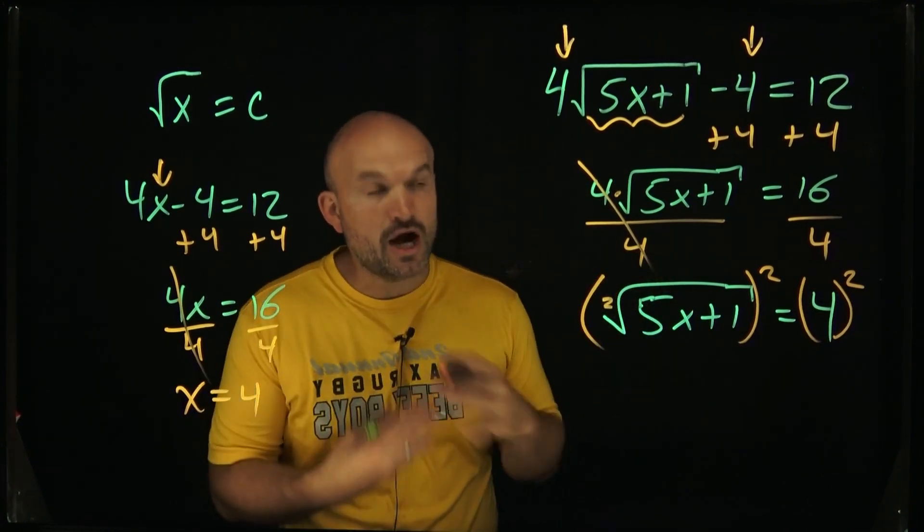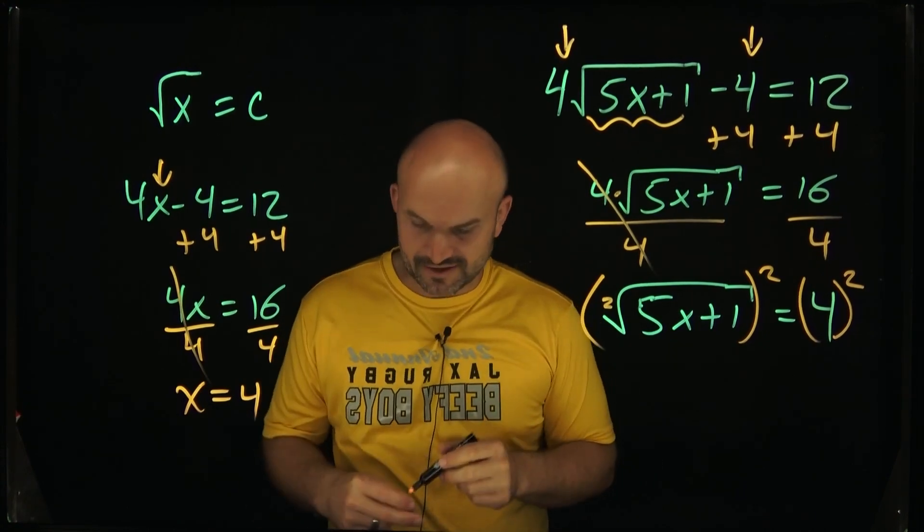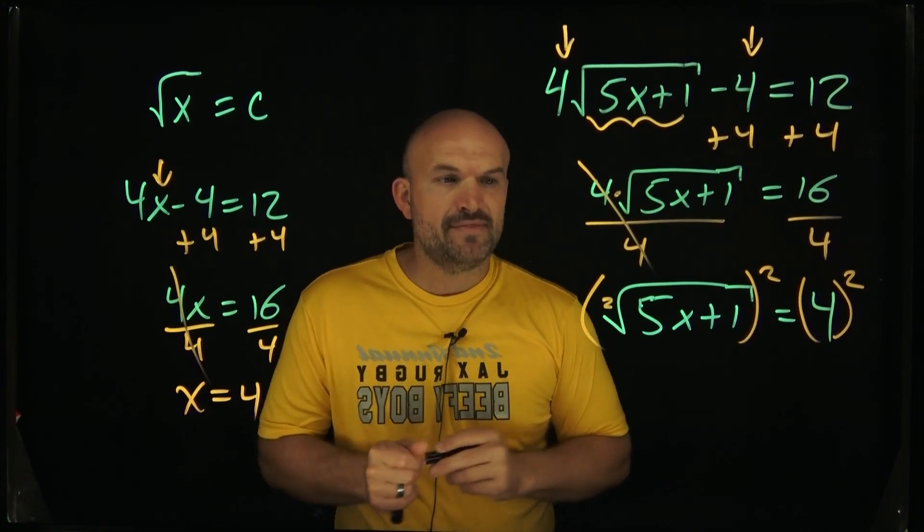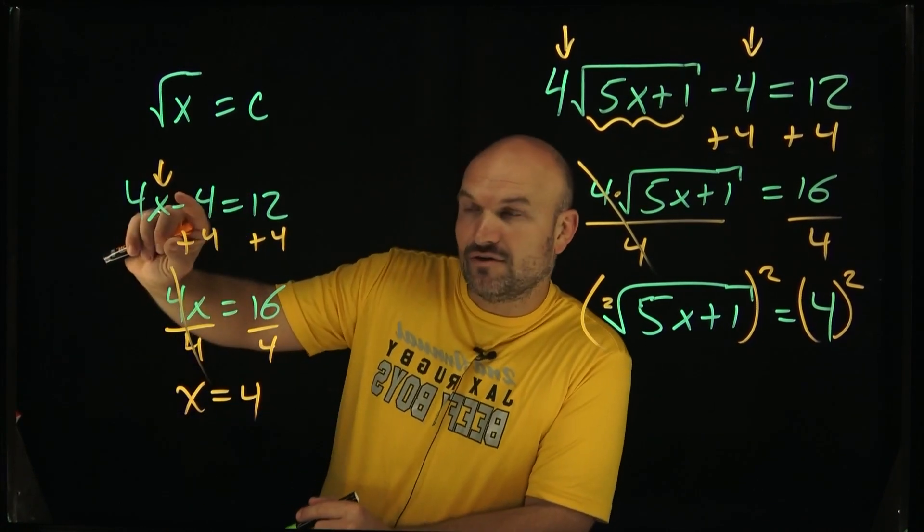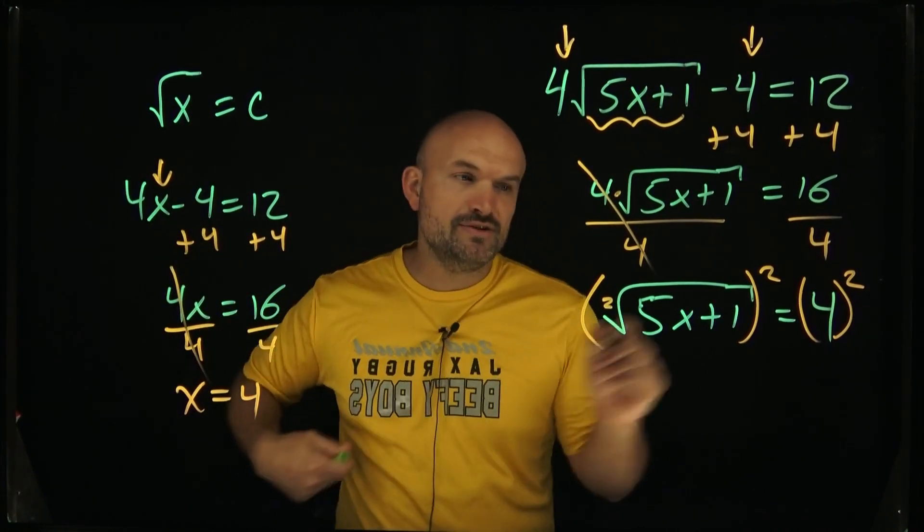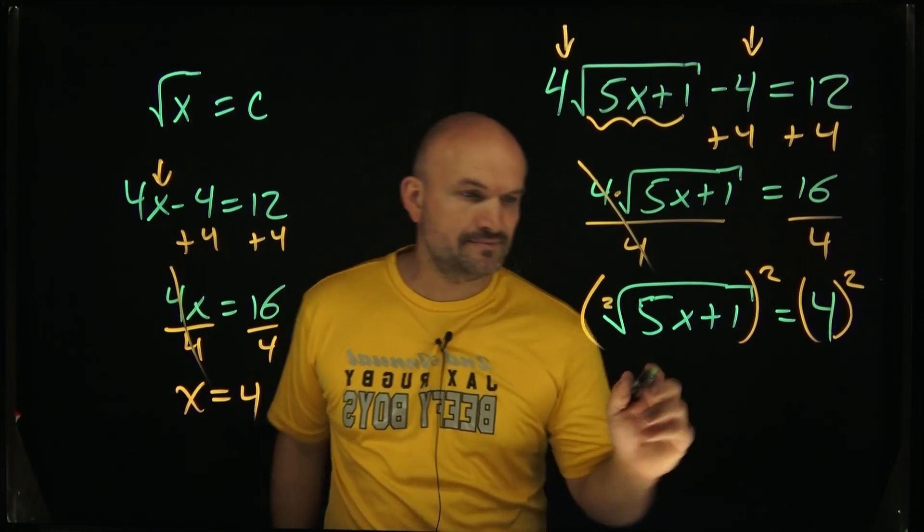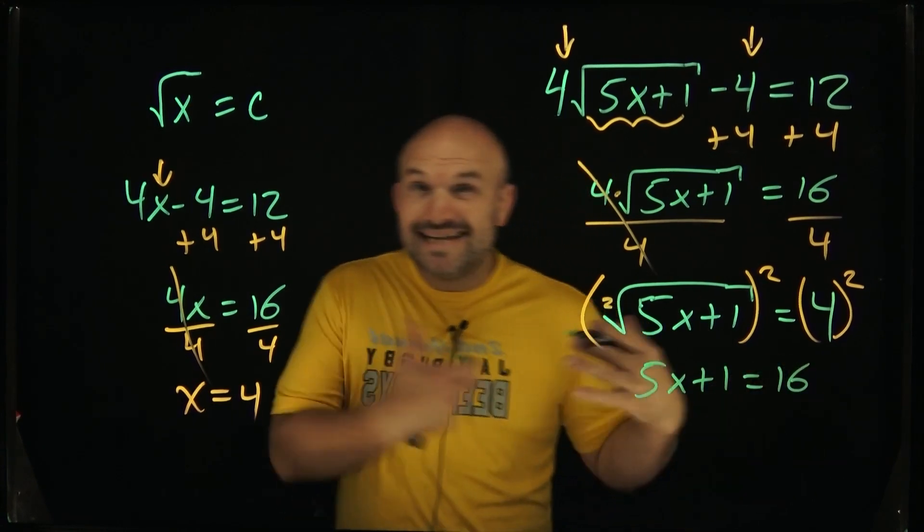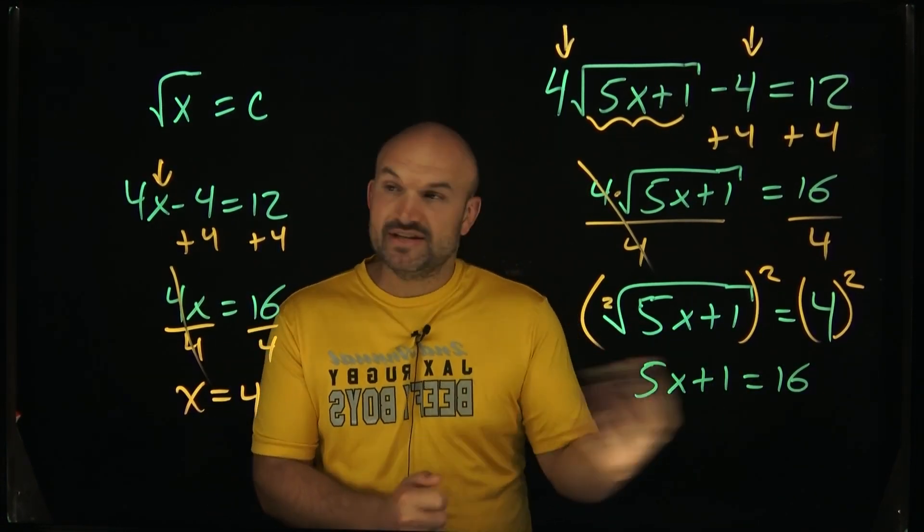Now, when we're squaring both sides, we always need to be careful of creating extraneous solutions. We'll talk about that in some future videos. But for right now, I just want you to understand that the square root of something squared are inverse operations, just like they are over here. And therefore, what they're going to do is now just going to give us an equation, which is 5x plus 1 is equal to 16. And now you can see that I can use my inverse operations to go ahead and solve this two-step equation.